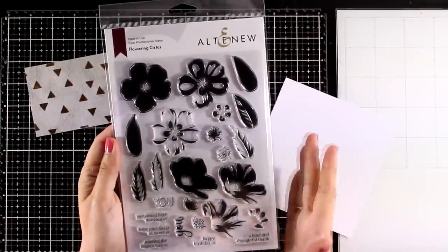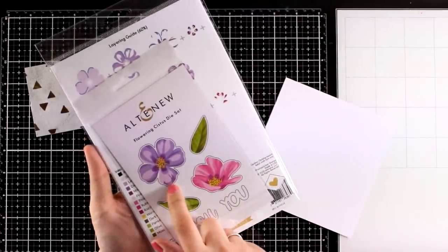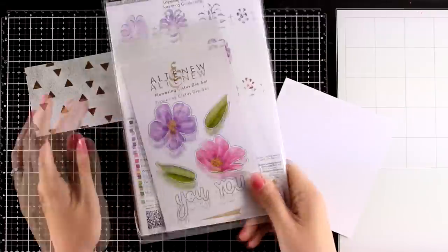For my flowers today I will be working with the Flowering Cistus. This is a new stamp set by Altenew. There are matching dies that I will be working with today as well.